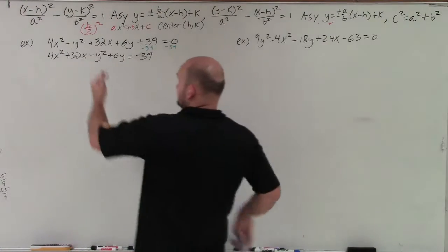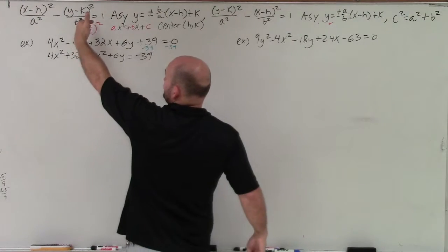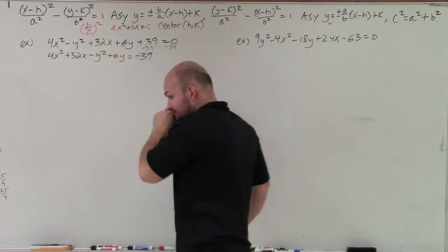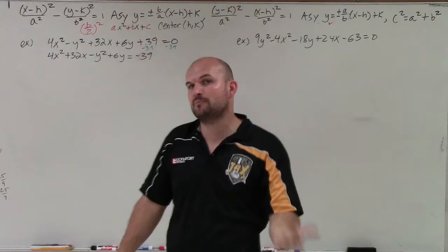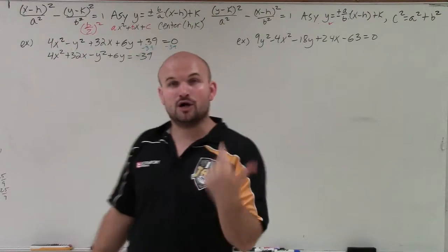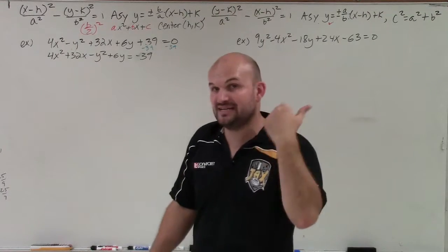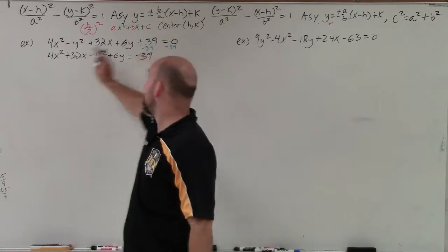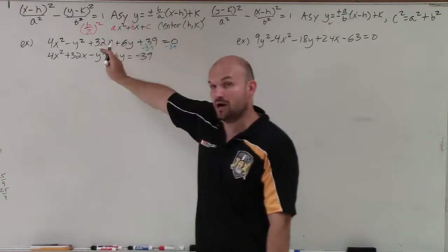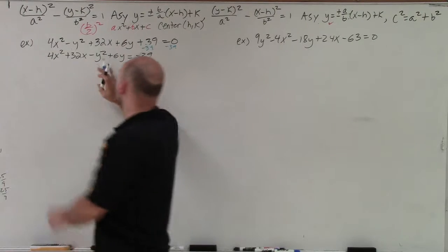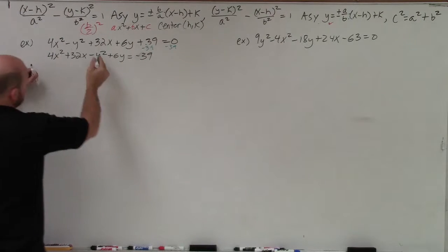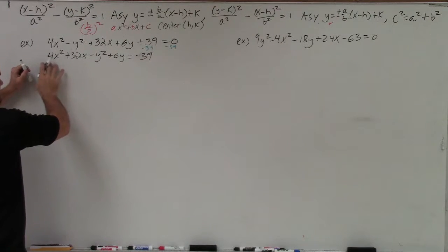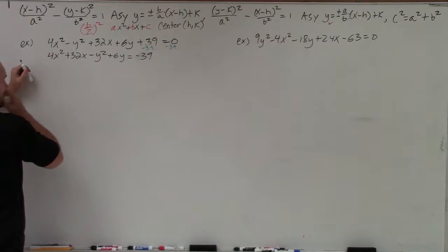We can only use b divided by 2 squared when a is equal to 1. In this case, our a is not equal to 1, so I need to factor out that leading coefficient.